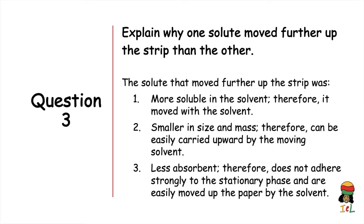Question three: explain why the blue solute moved further up the strip than the yellow solute. There are three possibilities. One: the blue solute was more soluble in the solvent, therefore it moved with the solvent. Two: the blue dye particles were smaller in size and mass compared to the yellow solute, making it easier for the solvent to carry them up the chromatography strip. Three: the blue pigments were less absorbent than the yellow ones, therefore they do not adhere strongly to the stationary phase and are easily moved up the paper by the solvent.